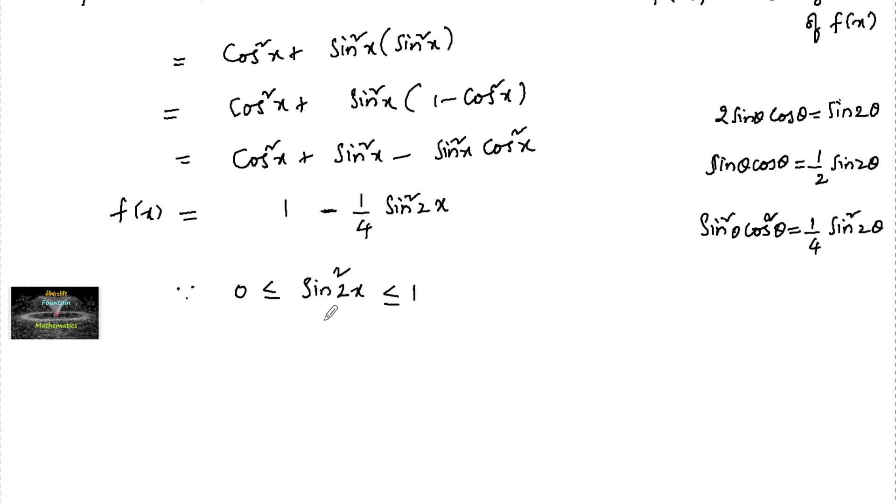Dividing by 4, 0 ≤ sin²2x/4 ≤ 1/4. Multiplying by -1, the inequality becomes -1/4 ≤ -sin²2x/4 ≤ 0.